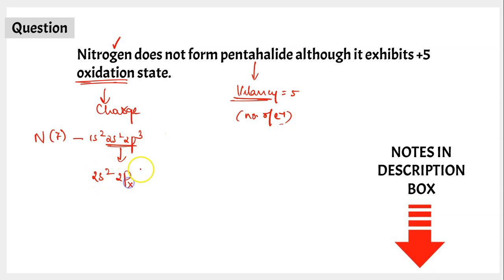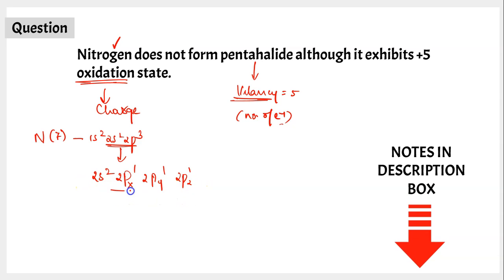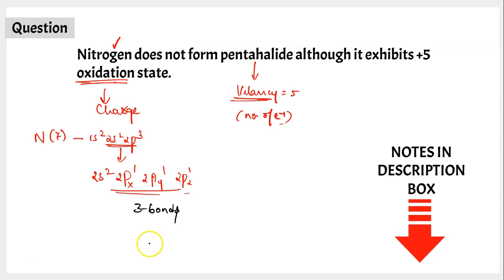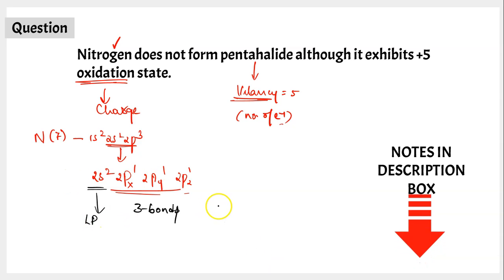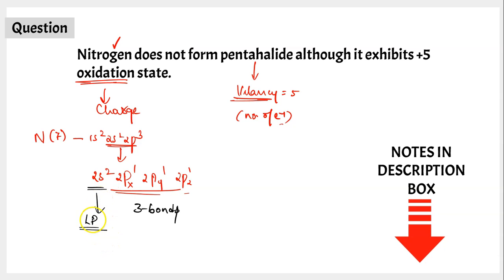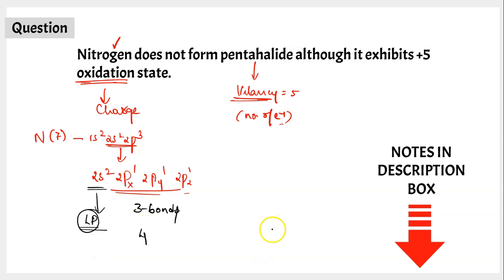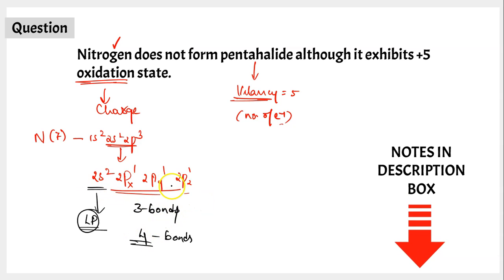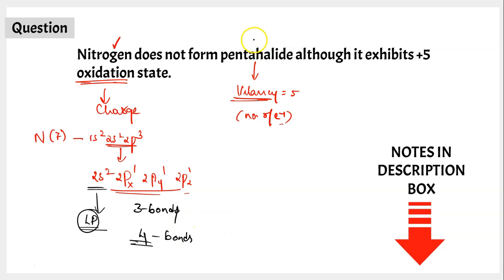Looking at nitrogen's valence configuration 2s², 2px¹, 2py¹, 2pz¹, we see 3 unpaired electrons, meaning nitrogen can readily form 3 covalent bonds. The remaining 2 electrons exist as a lone pair. In some cases, this lone pair can be donated into empty orbitals and contribute to chemical bonding. Including this lone pair, the maximum covalency of nitrogen is 4 bonds.